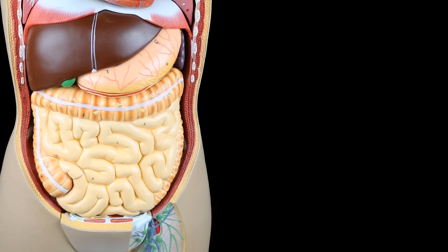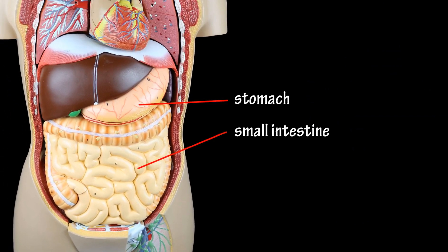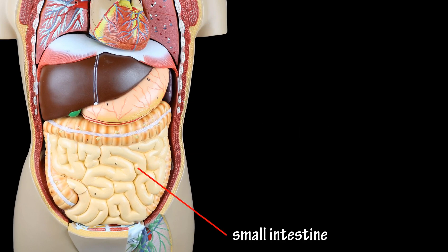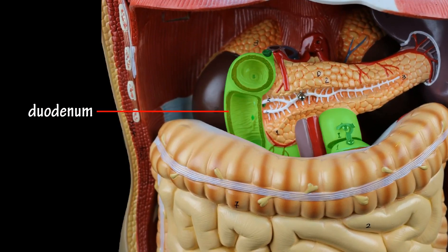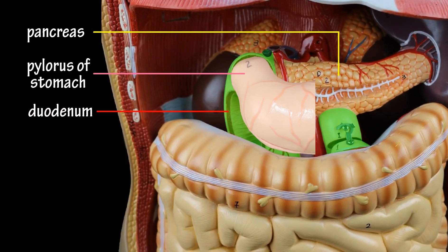Your small intestine is located just below your stomach as it coils and loops, filling a large portion of your abdominal cavity. The small intestine has three sections, with the duodenum being the first section — it wraps around the pancreas and connects to the pylorus of the stomach.